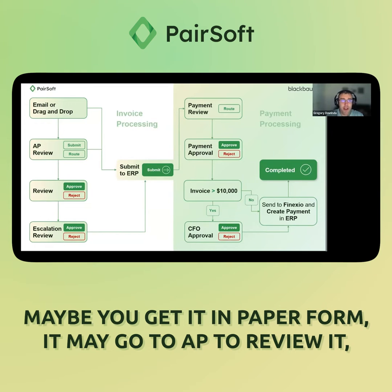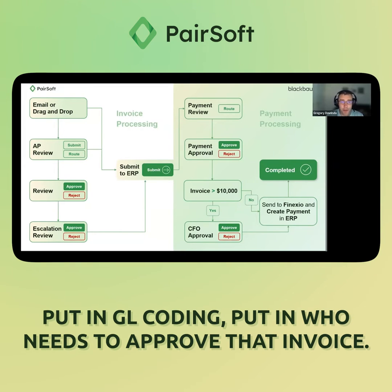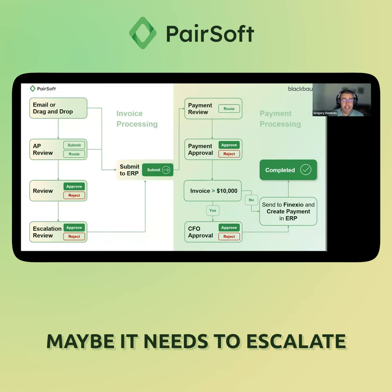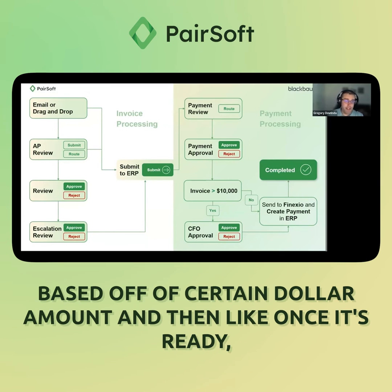It may go to AP for them to review it, put in GL coding, and put in who needs to approve that invoice. Then it goes out to those reviewers. Maybe it needs to escalate based off of a certain dollar amount.